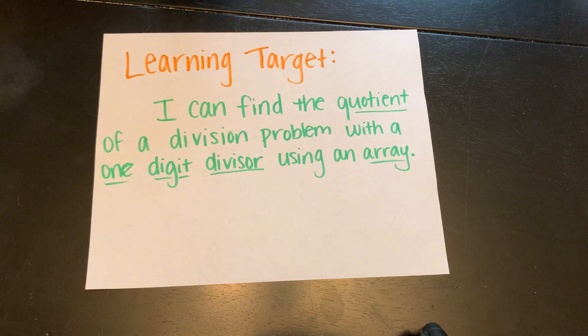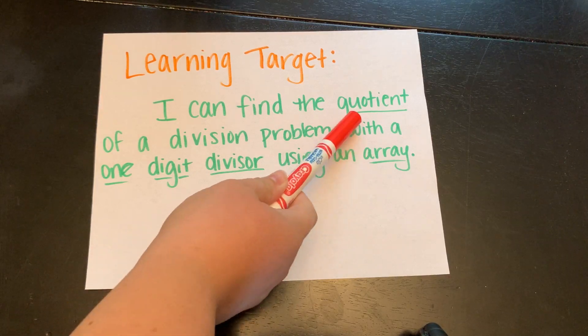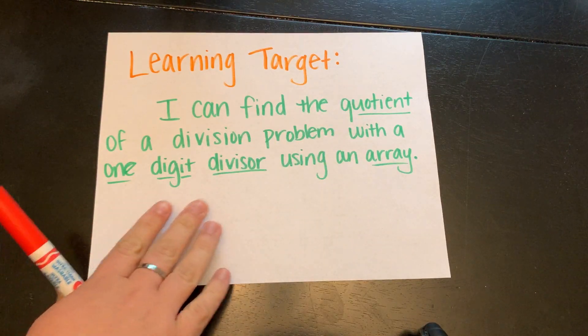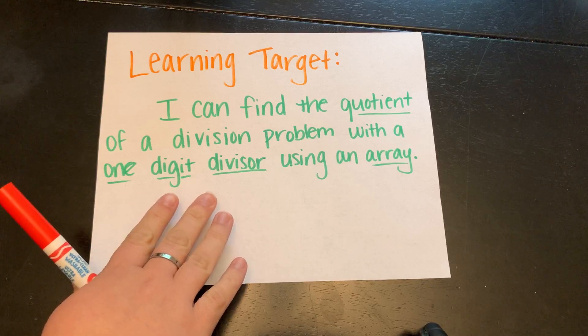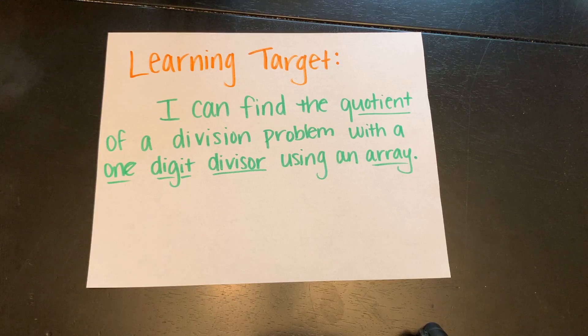Today's learning target is I can find the quotient of a division problem with a one-digit divisor using an array. We're going to pay attention to our vocabulary words. Quotient means the answer to a division problem. Our one-digit divisor means that we're dividing by one number on the outside, and we're using that array method that we have used in multiplication and division throughout this unit.